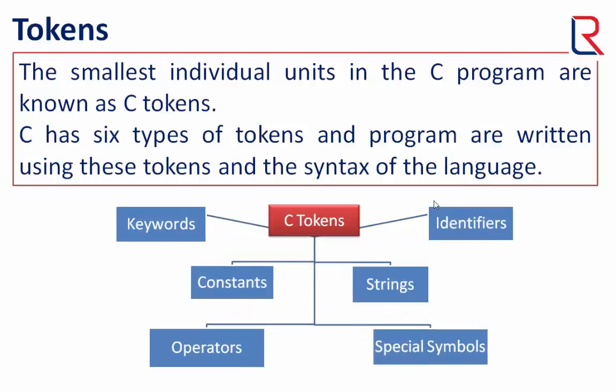So let's see the classification of tokens. C tokens are: keywords, identifiers, constants, strings, operators, and special symbols.